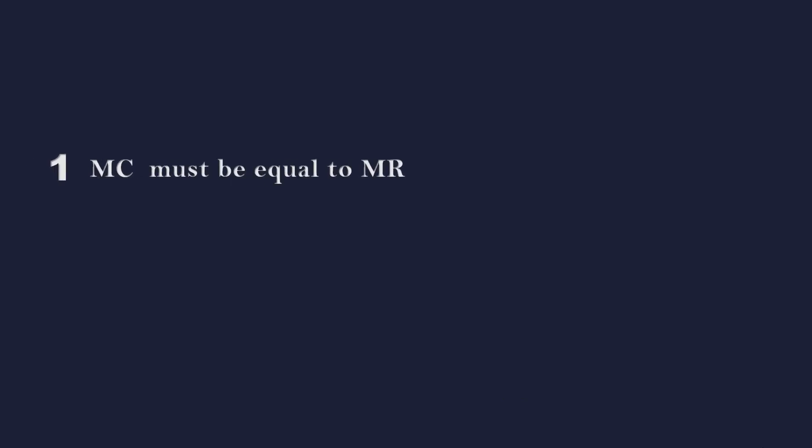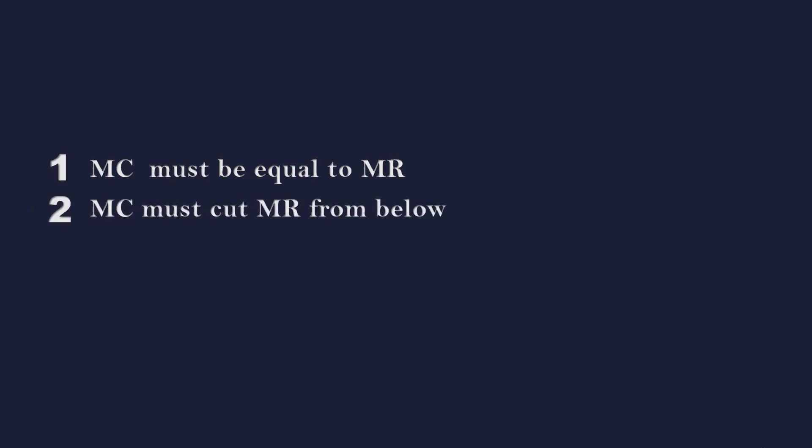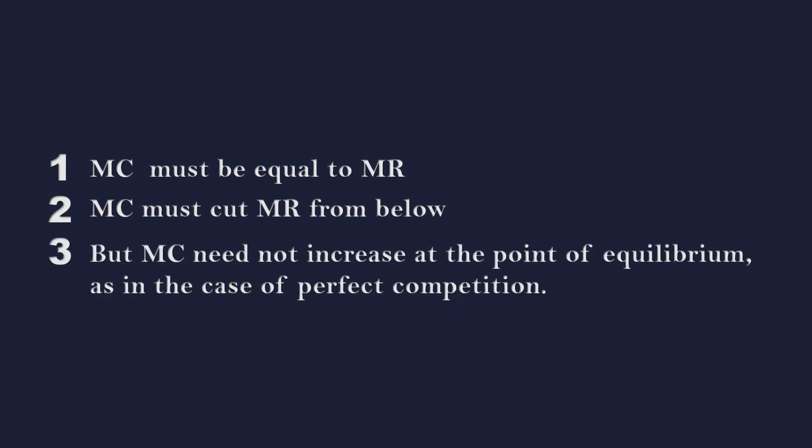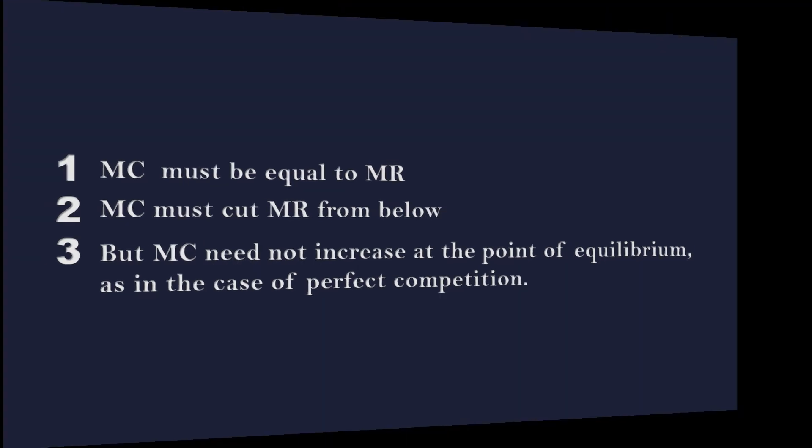At the point of monopoly equilibrium, marginal cost must be equal to marginal revenue. The marginal cost curve must cut the marginal revenue curve from below. But marginal cost need not increase at the point of equilibrium, as in the case of perfect competition.